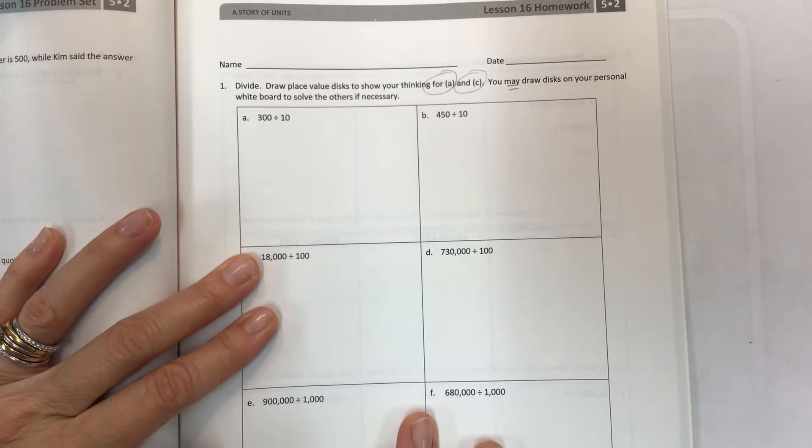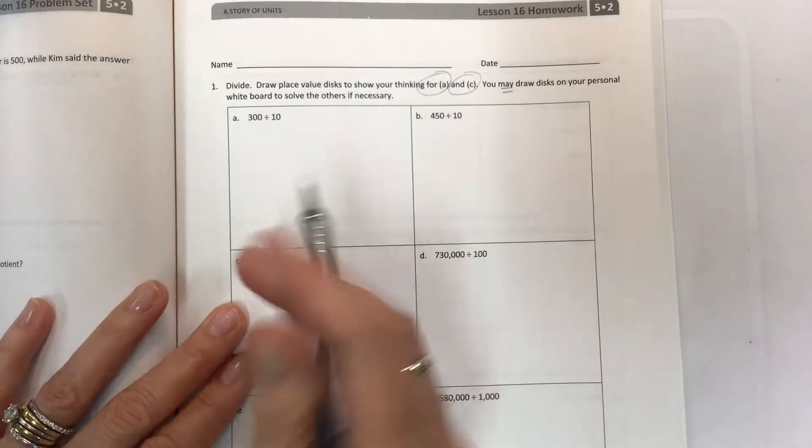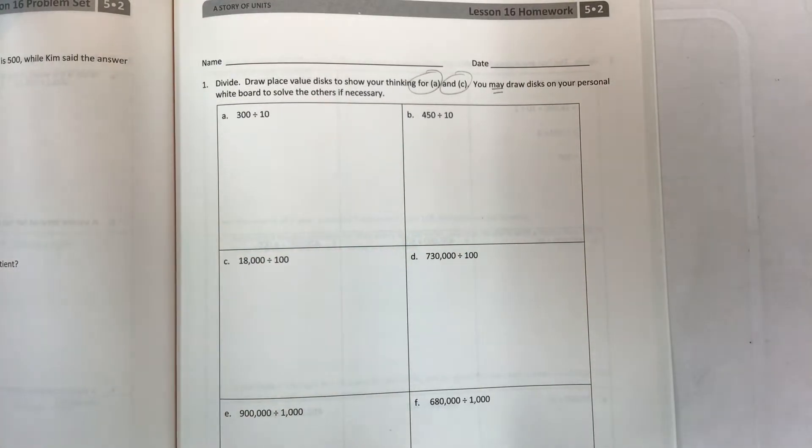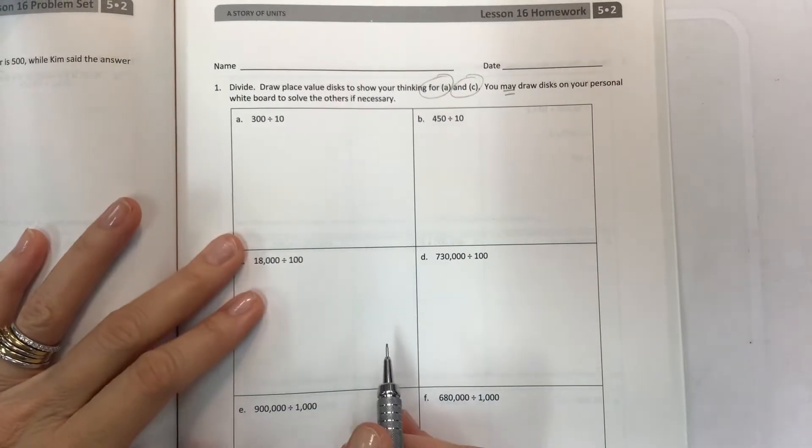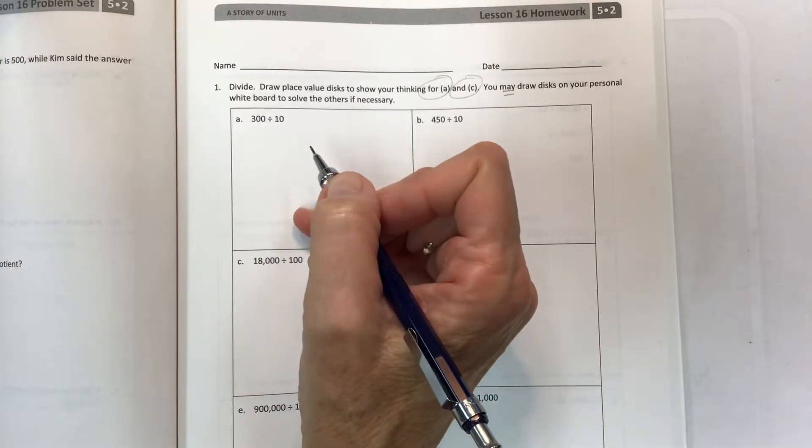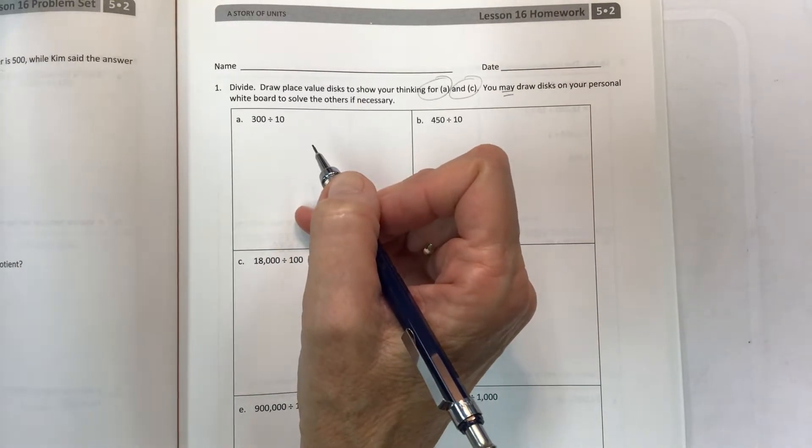I won't be doing it because it just takes a lot of time, and I think that the shortcut way that I talk about in my problem set video is much more helpful than any place value discs ever could be.